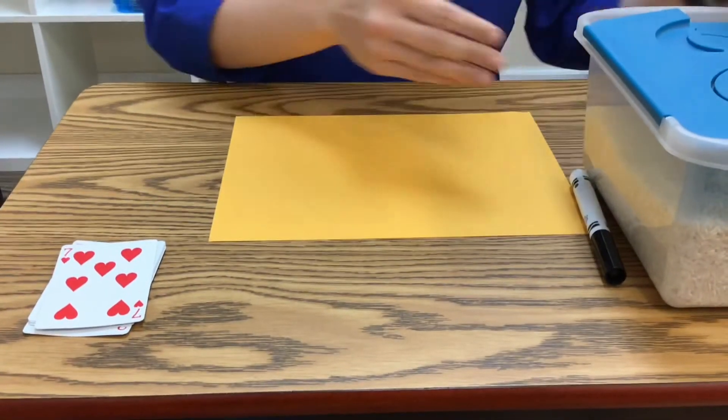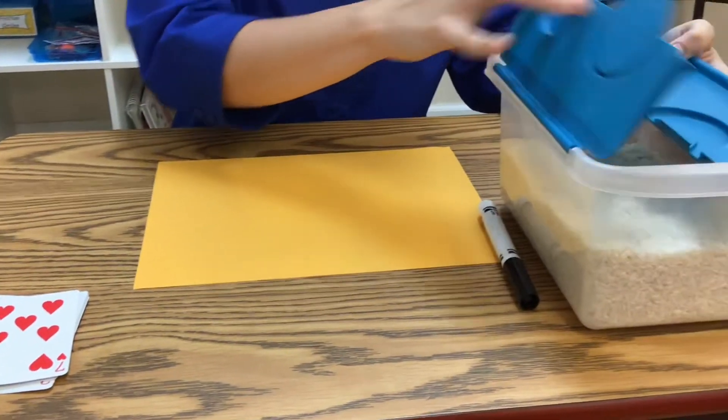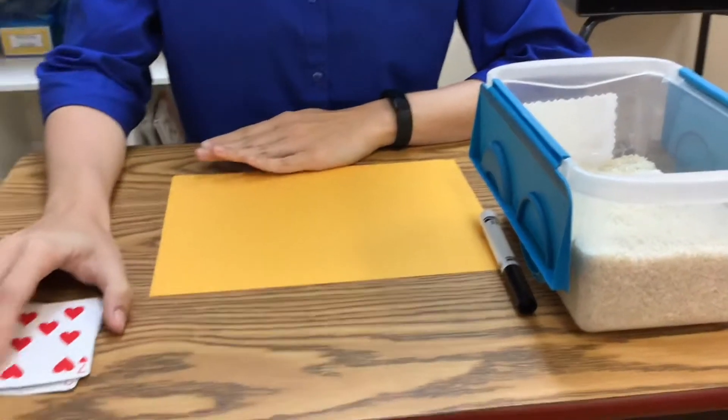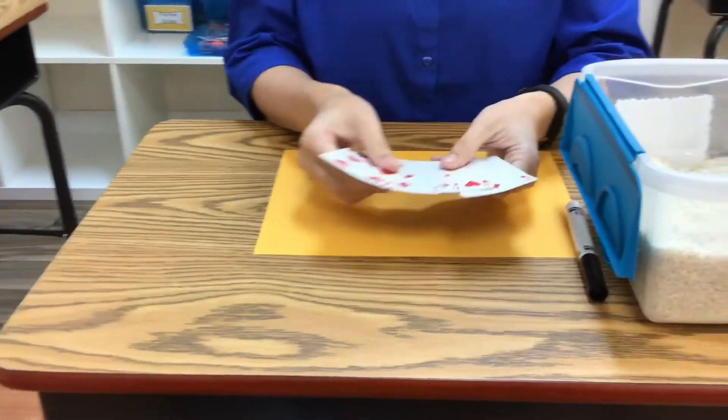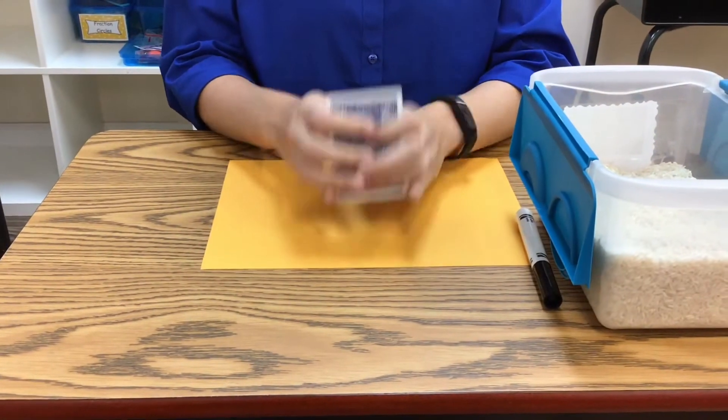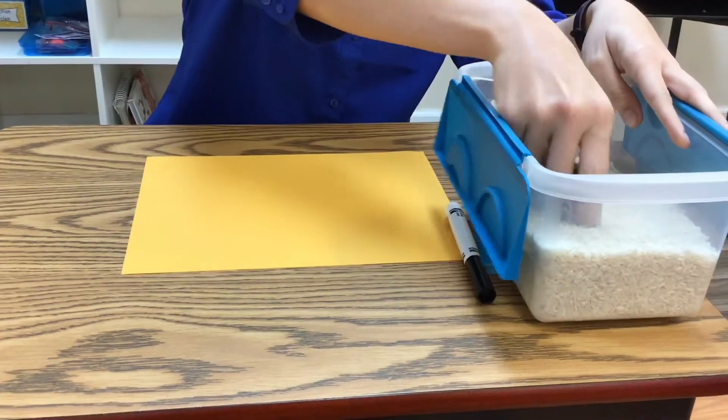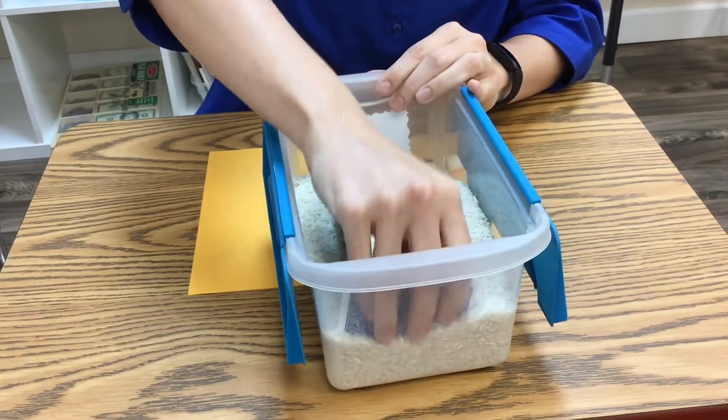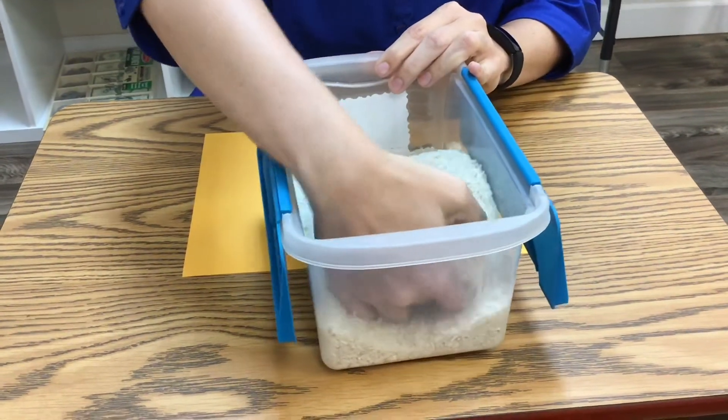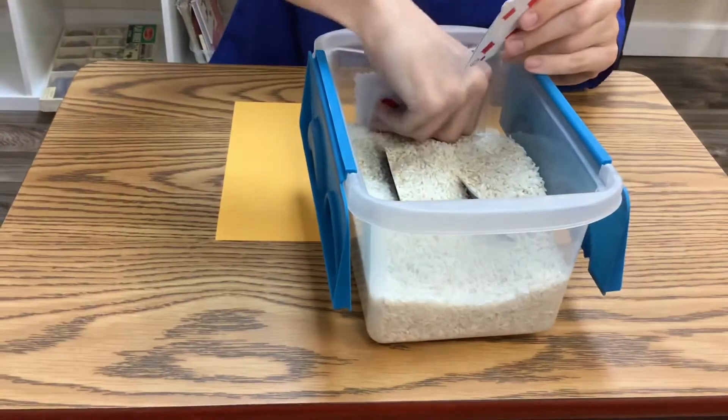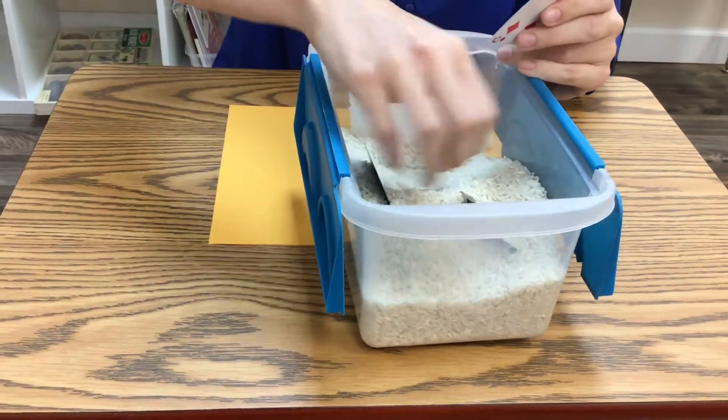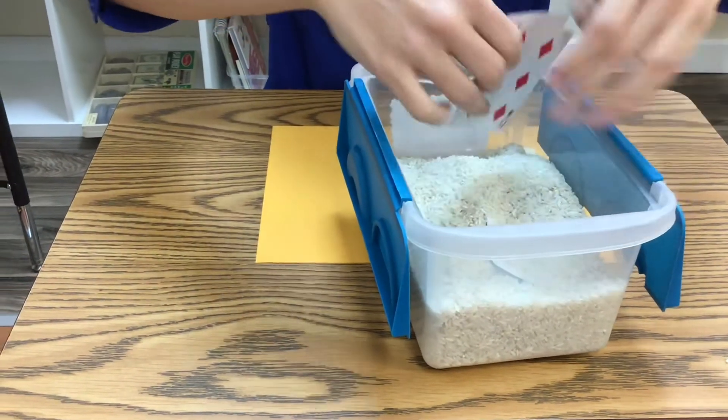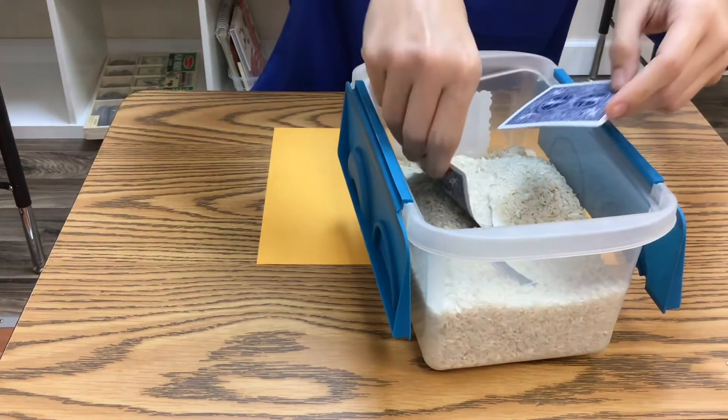To begin this activity, you will need your bucket of sand ready. After, I would like you to take your cards and look at your numbers. Make sure you put your cards in your sand. Hide them in different locations. Be careful using your cards because they bend easily. If you do not think you can do this activity alone, make sure that you ask for help.